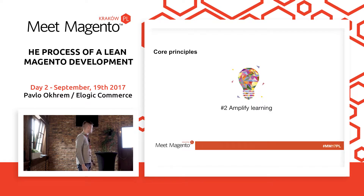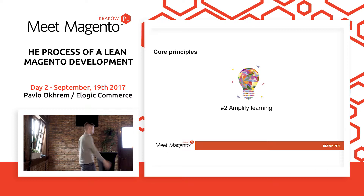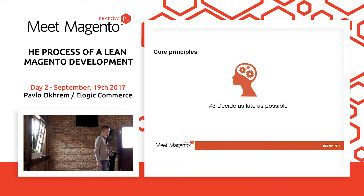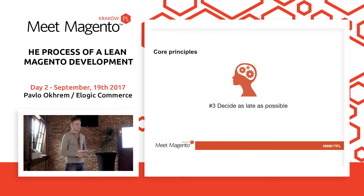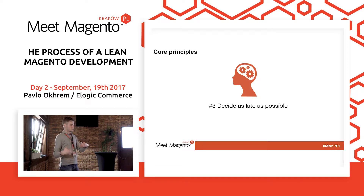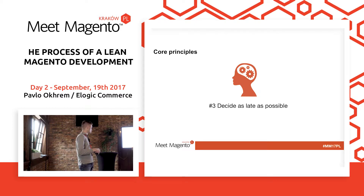Learning is very important in the process, and when you're applying the Lean principle, you have to empower a team to learn. Decide as late as possible — this is a really tricky one, because if the process is fast and we are focused on the value, the classical point is that we have to decide fast. But in terms of Lean, we have to decide as late as possible for this feature or thing to bring the most of the value.